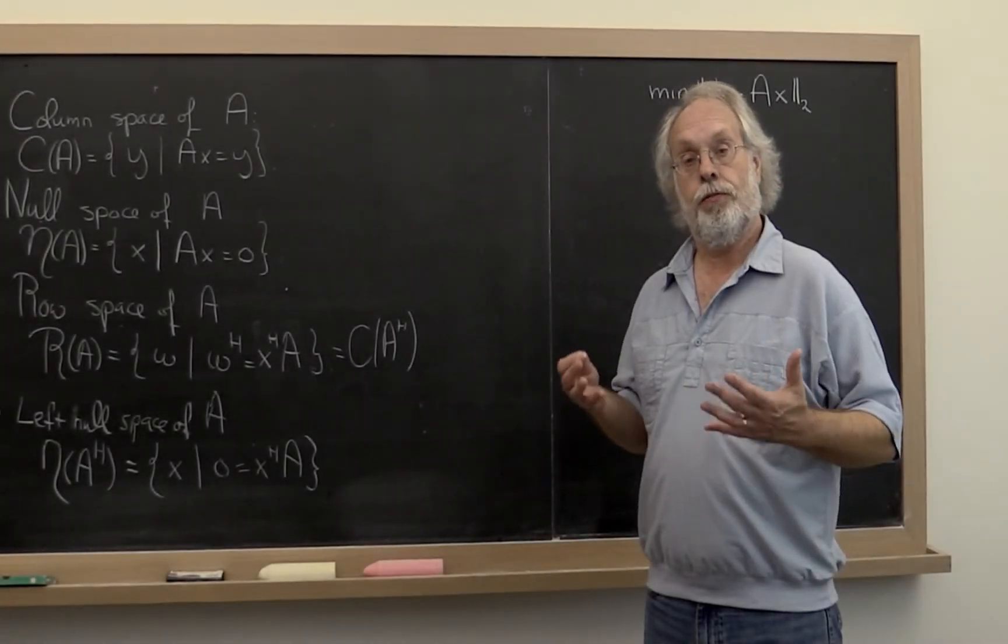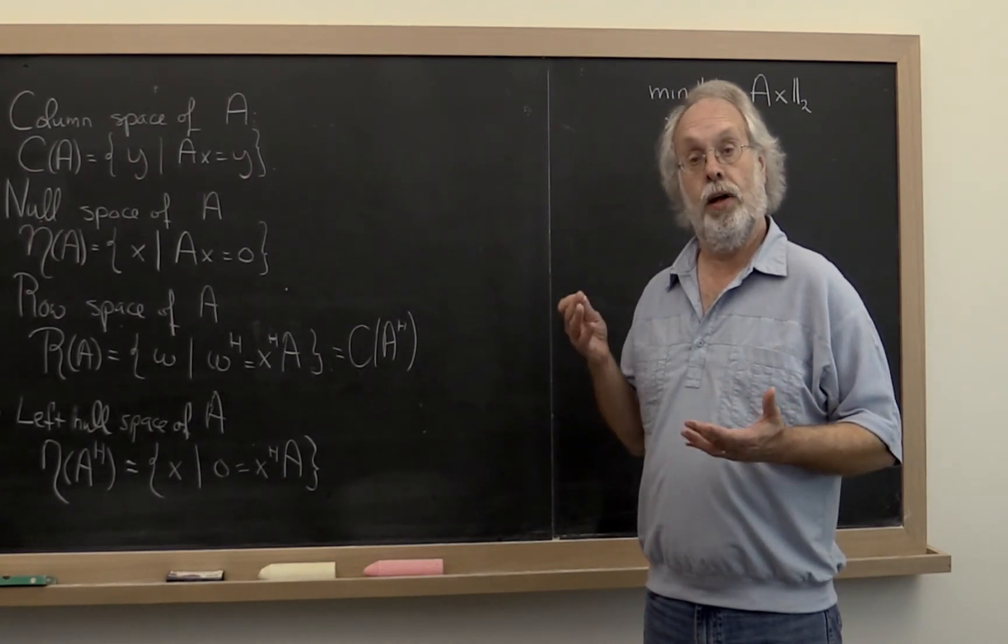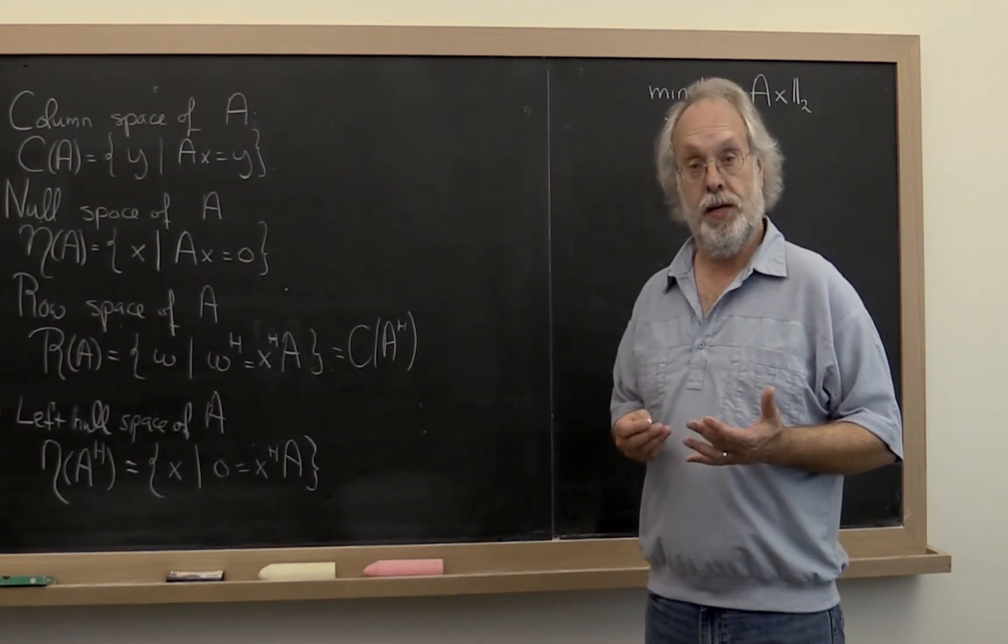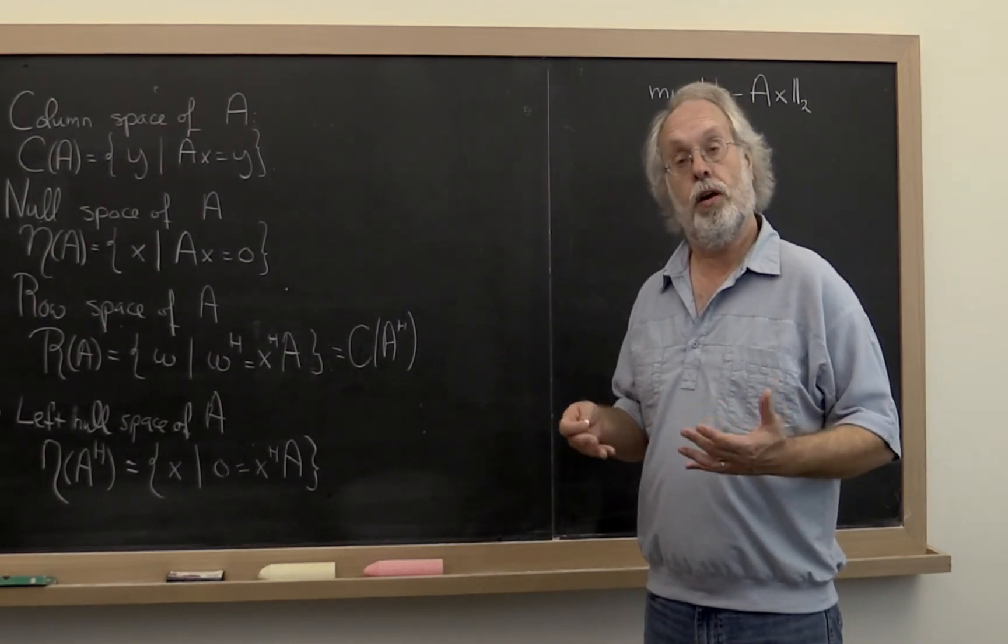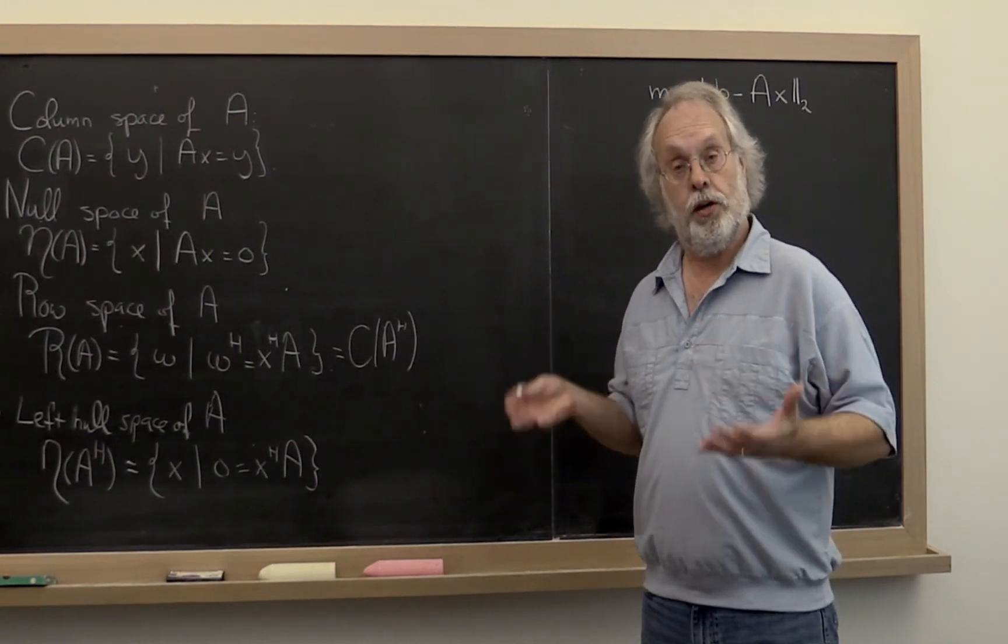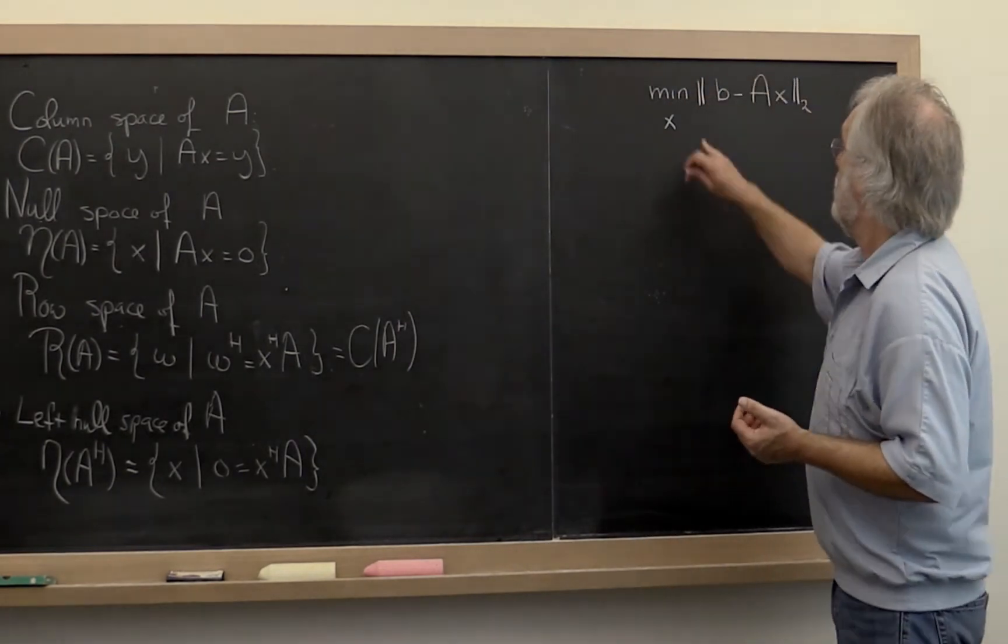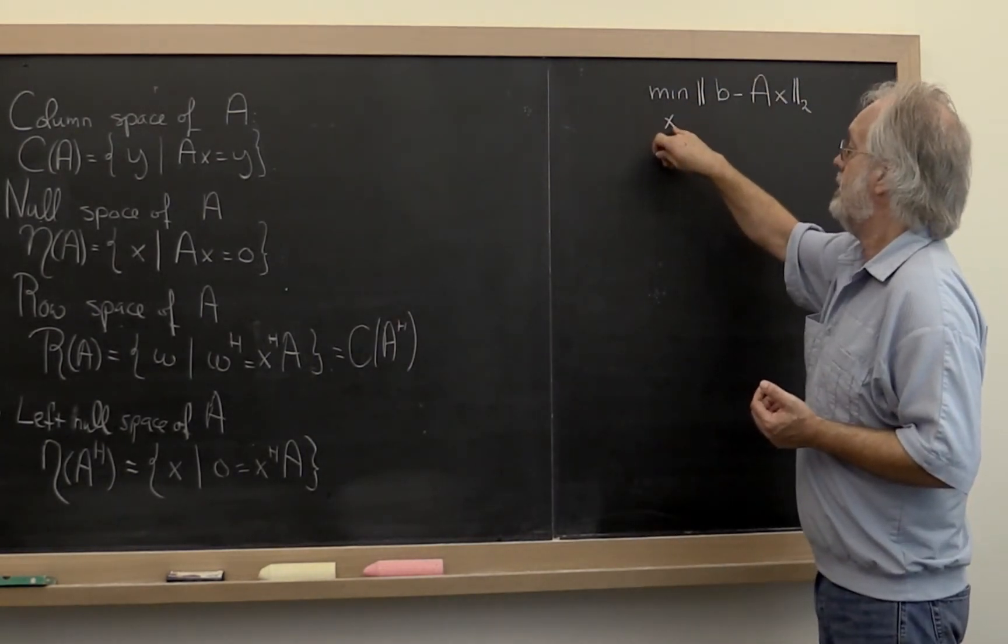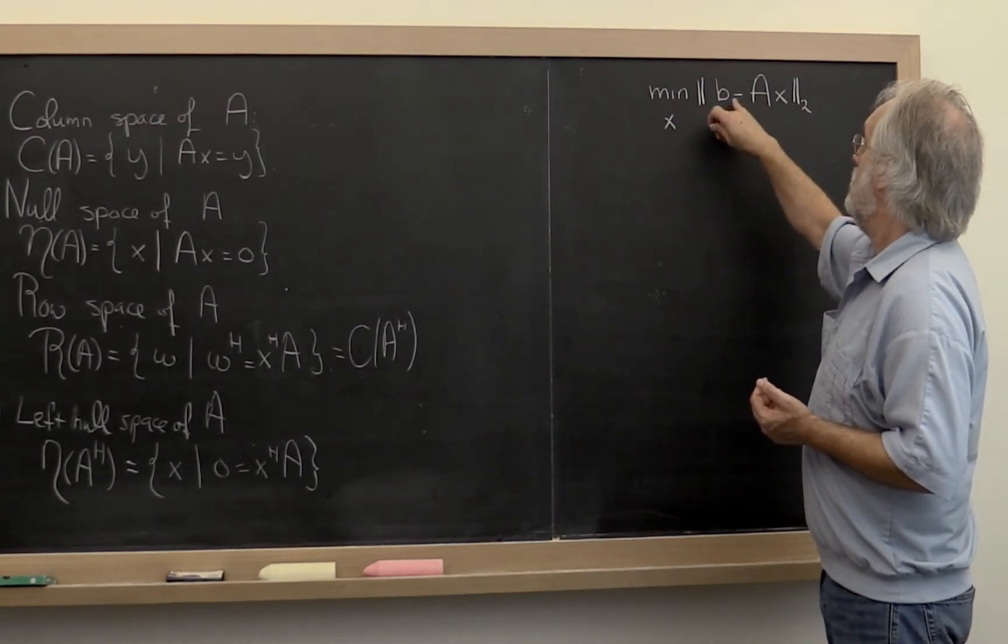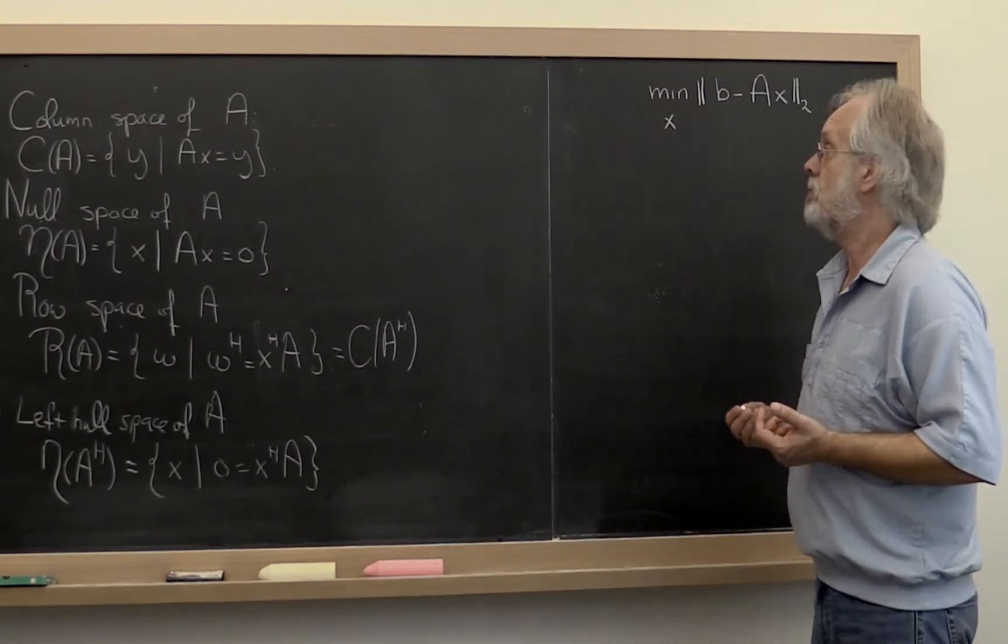Now that we understand the four fundamental spaces and how they relate to how A maps a vector x to a vector in a column space, we can come up with our first practical method for solving the linear least squares problem. Notice that we want to find the x that minimizes the 2-norm of b minus ax. That's how we formulated the linear least squares problem.